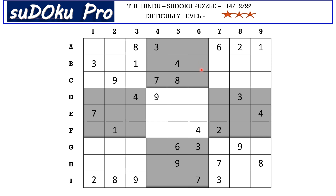Let's start with the top section. If you look at this block, you have the top section alone filled and two empty rows. Whichever number is blocking this entire row will go in that row. We have 9, 7, and 8 blocking this row completely, so 9, 7, and 8 can go in these three cells, but we cannot figure out which number goes in which cell.